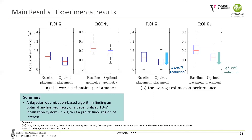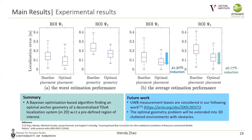In summary, we propose a Bayesian optimization-based algorithm to find the optimal anchor geometry of a TDOA-based UWB localization system with respect to a predefined region. We demonstrate that the localization performance inside a predefined region can be improved by as much as 40% through optimizing anchor geometry. This also provides localization performance limits before physically installing anchors, saving time and effort. This is a preliminary work assuming unbiased TDOA measurements. In our most recent work, we corrected systematic biases, and we are extending the algorithm to 3D cluttered environments considering obstacles.